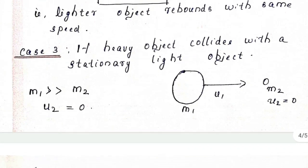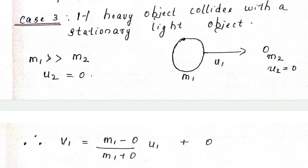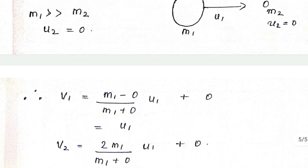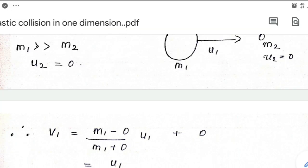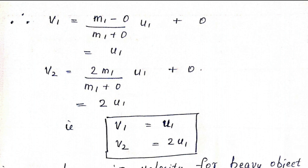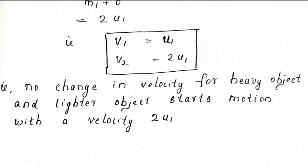Case 3: if the heavy object collides with a stationary light object. Here the second body is the light object at rest and the heavier body is in motion, so m1 is very much greater than m2. Neglecting m2 and with u2 equal to 0, substituting gives v1 equal to u1 and v2 equal to 2u1. There is no change in velocity for the heavy body, and the light body which was at rest starts moving with twice the velocity of the heavier body.